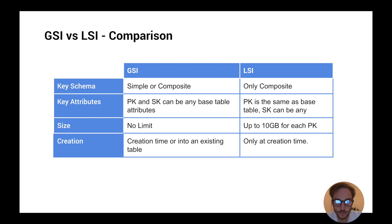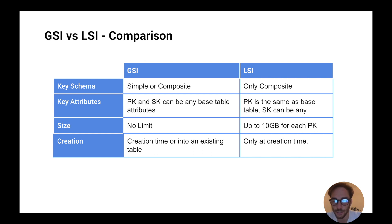Next is creation — when you can create an index. You can create a global secondary index at table creation time or after the table already exists. Keep in mind that creating a global index on an existing table can take time depending on the table size. On the other hand, local indexes can only be created at table creation time.